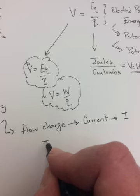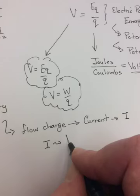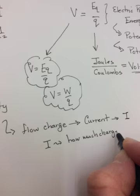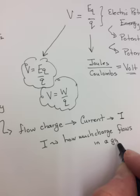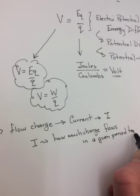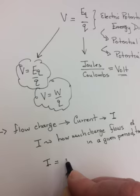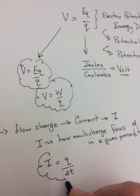And current is really how much charge flows in a certain period of time. How much charge flows in a given period of time. And you should be able to almost see an equation here. How much charge, Q, given period of time, T.